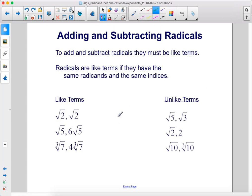To add and subtract radicals they must be like terms. Radicals are like terms if they have the same radicands and the same indices.